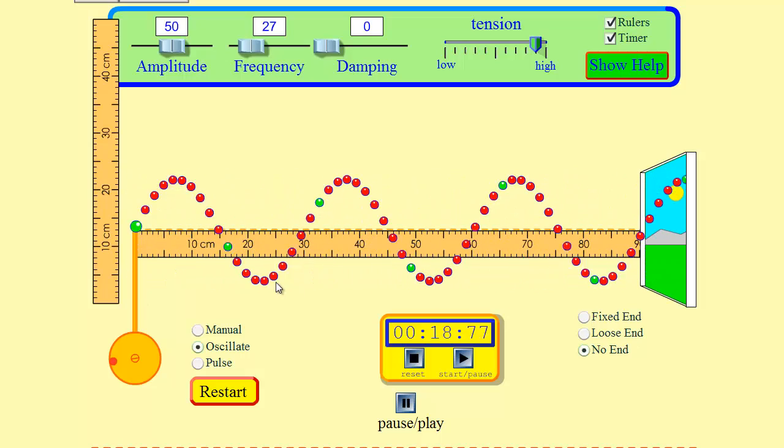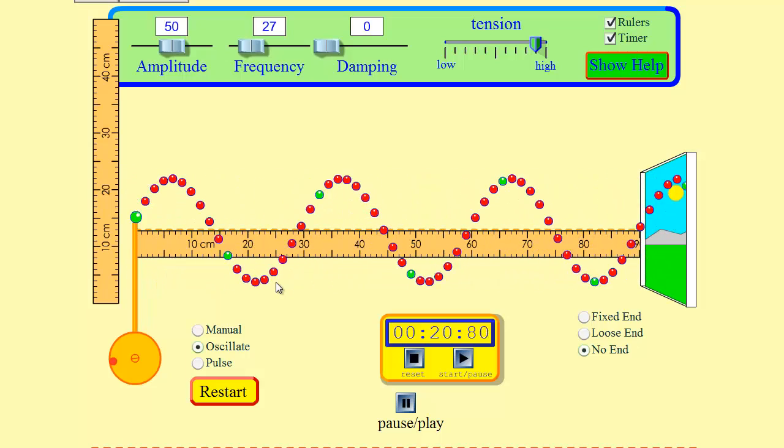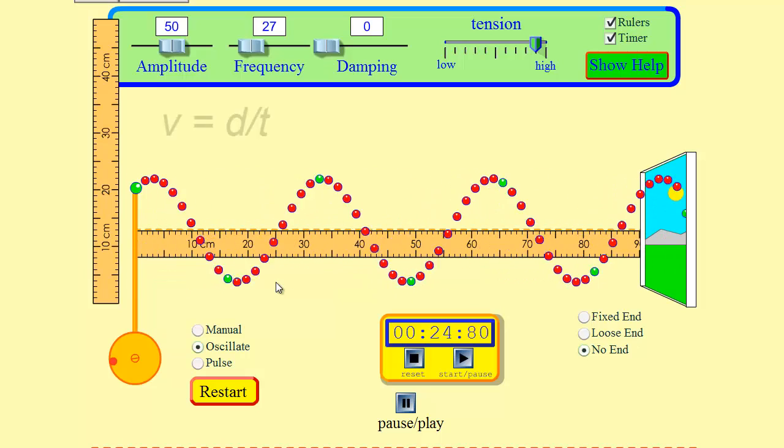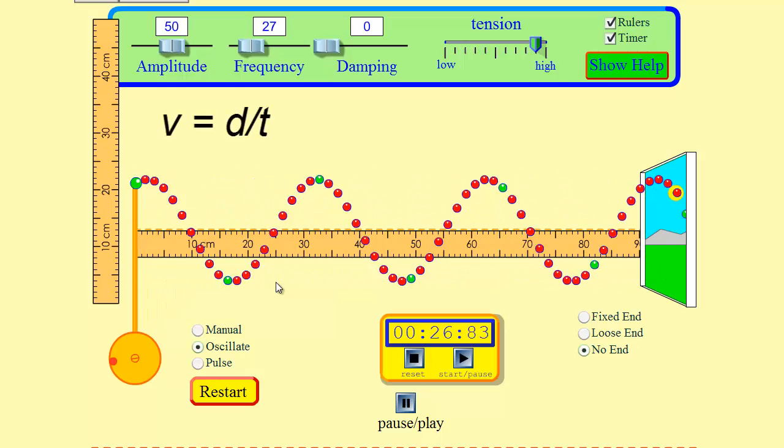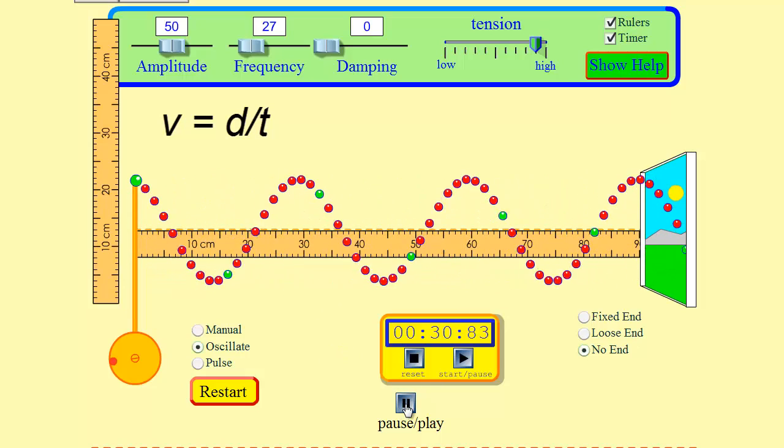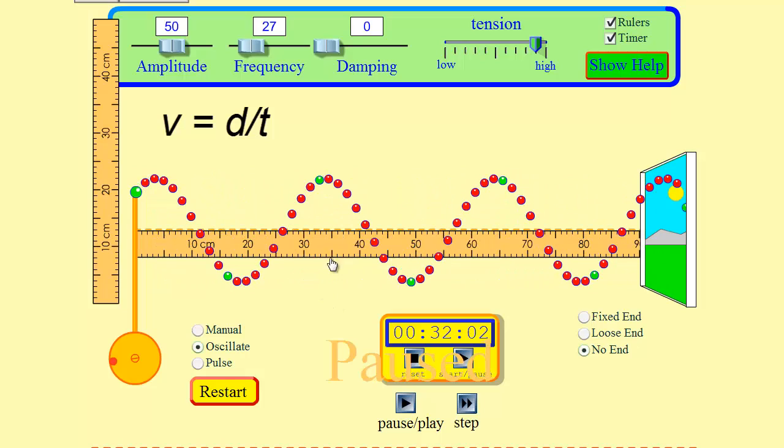Now to figure out the speed we know from kinematics that all we need to do is use a distance and a time since velocity or speed is distance divided by time. So it's fairly straightforward. All we'd have to do is measure the distance so I could hit pause here.